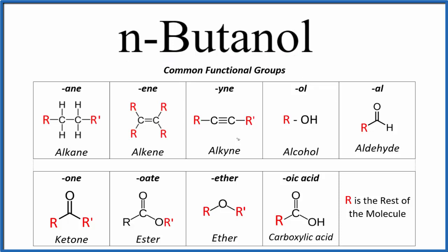So we have this table of common functional groups that we see in organic chemistry, and we see O-L. When something ends in O-L, it's an alcohol. That means it's going to have this R, which means the rest of the molecule, but we'll have an O-H group. So we know that because of this O-L, it's an alcohol.